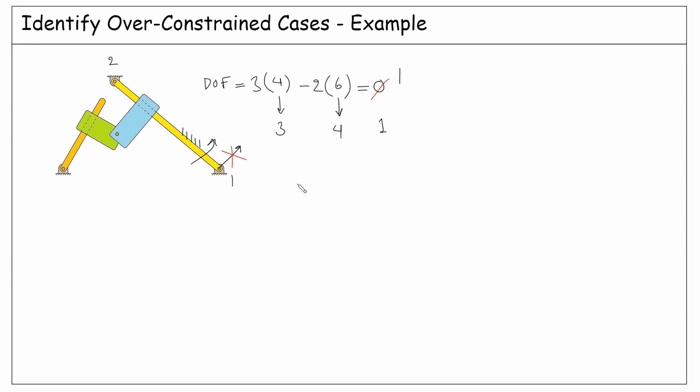So with this example, we learned that we can still use the formulation as long as we are careful about over-constrained cases, such as when two bodies are connected to each other by more than one revolute joint.